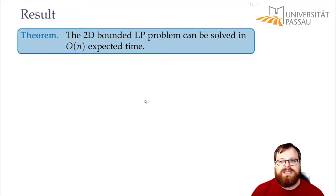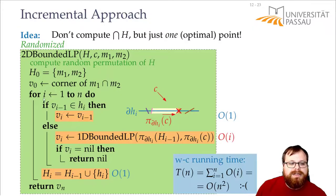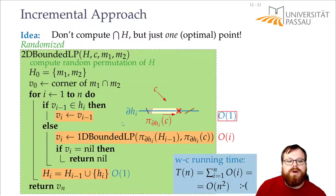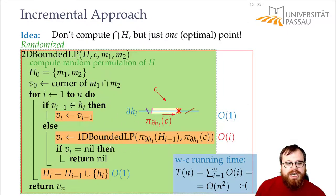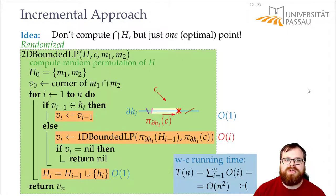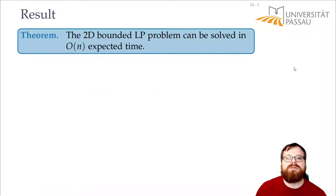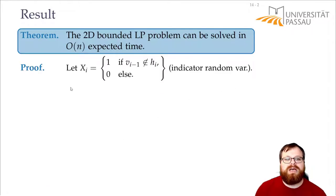How can we prove this? Well, this is randomized, so the running time we need for a single step depends on which case we are in. It is O(1) if the optimum doesn't change, and it is O(i) if the optimum does change. So in order to analyze the running time we want a random variable that tells us which of these two cases we fall into. This is our variable xi.